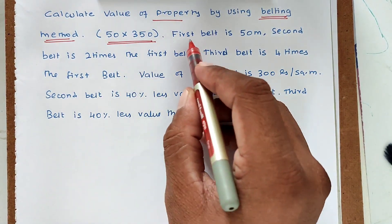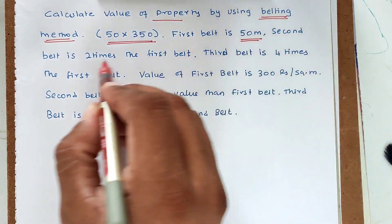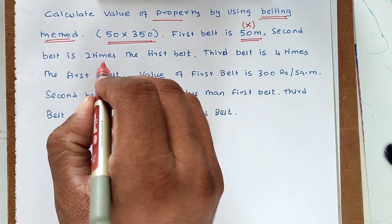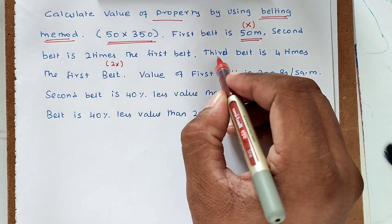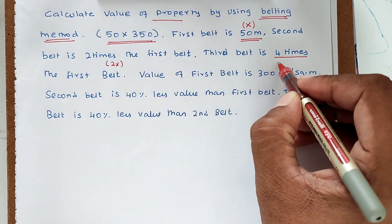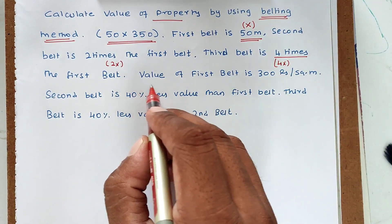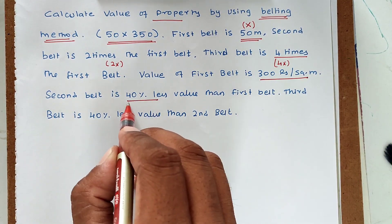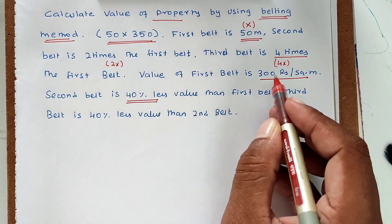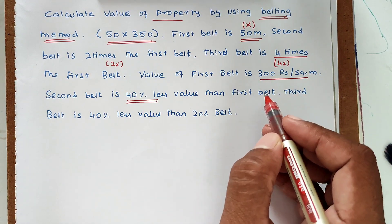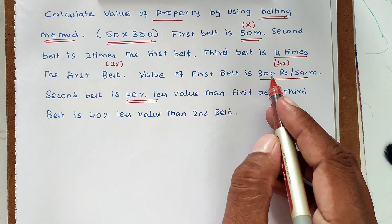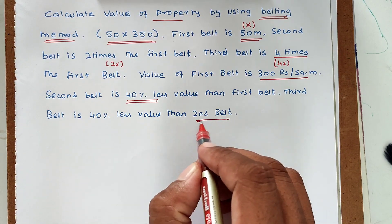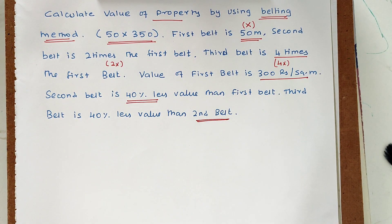The first belt is 50 meters, which we call x. The second belt is 2 times the first belt, so 2x. The third belt is 4 times the first belt, so 4x. The value of the first belt is 300 rupees per square meter. The second belt is 40% less in value than the first belt, so 60% of 300. The third belt is 40% less in value than the second belt.